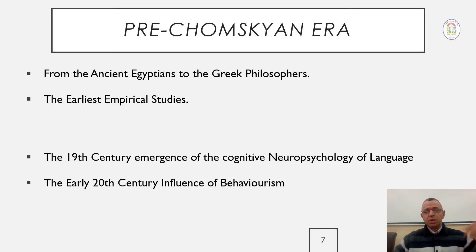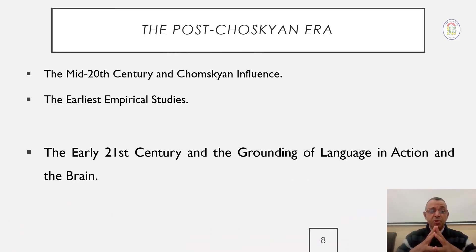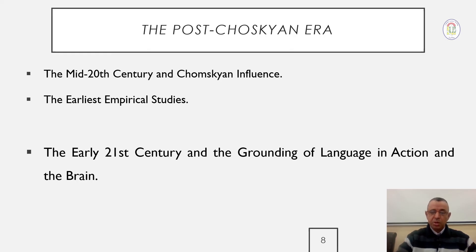In the pre-Chomskyan era, we go back to ancient civilizations, starting with the Egyptians and Greek philosophers, through the earliest empirical studies in the 17th and 18th centuries, to cognitive neuropsychology in Germany in the 19th century, and up to the early 20th century influence of behaviorism. The post-Chomskyan era generally started with the mid-20th century and the sciences that highlighted the importance of the mind in the production of language.